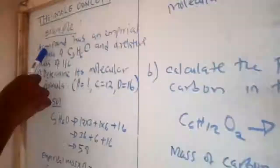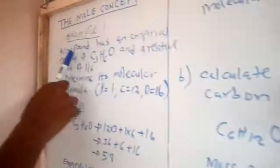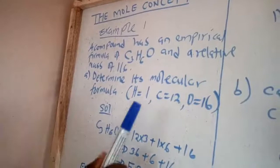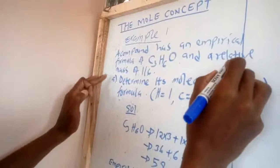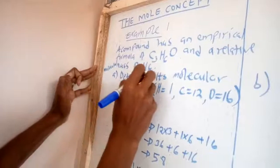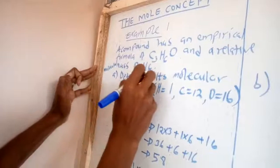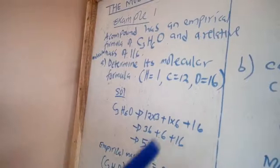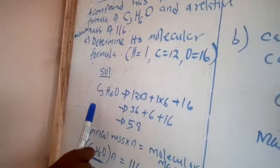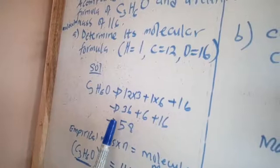As illustrated on the whiteboard, the question states: a compound has an empirical formula of C3H6O and a relative molecular mass of 116. You determine the molecular formula by first calculating the empirical mass. The empirical mass was demonstrated as 58.